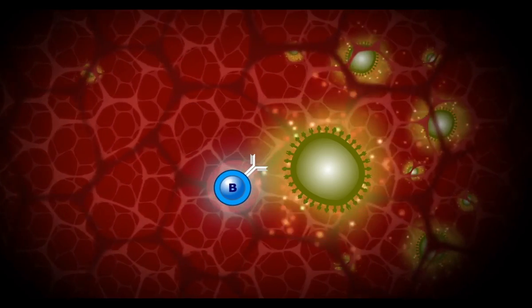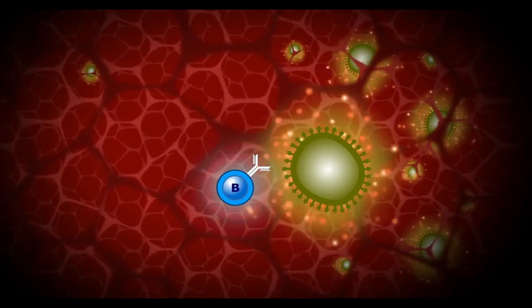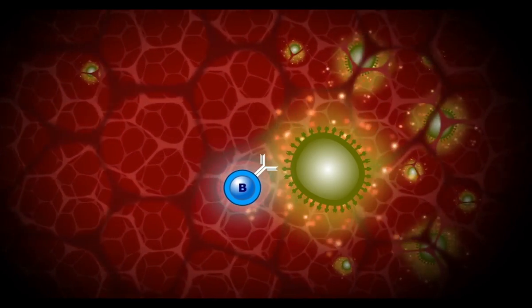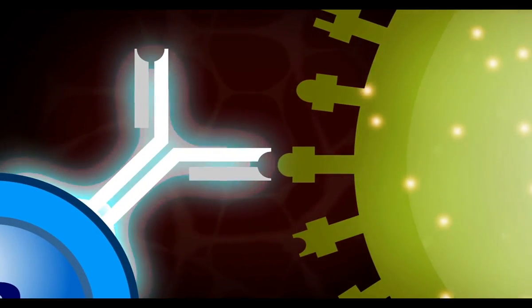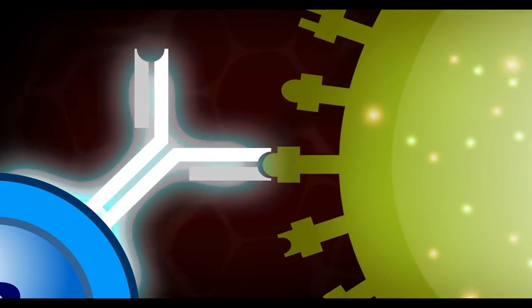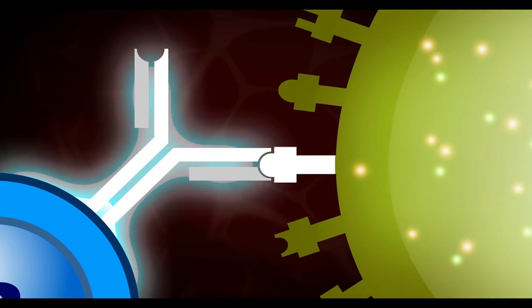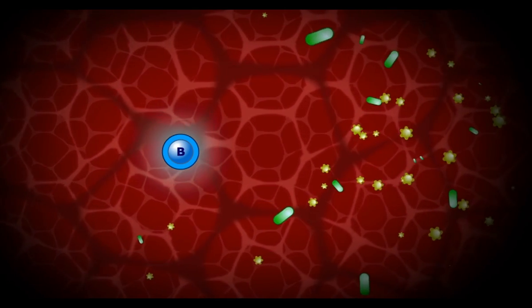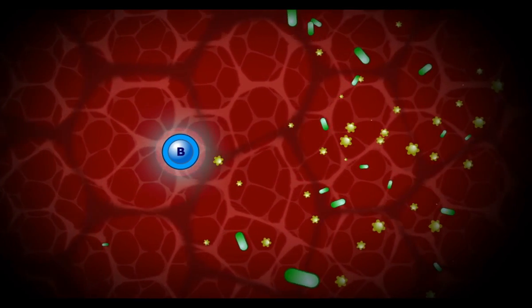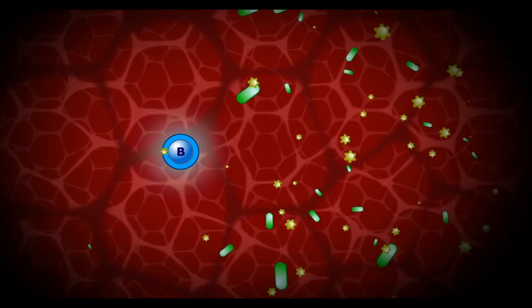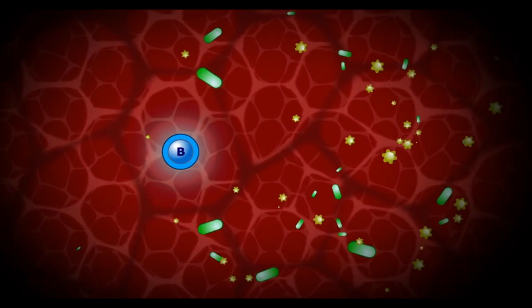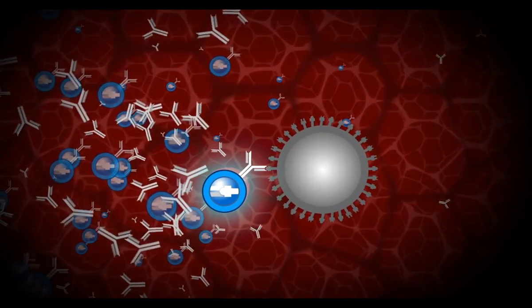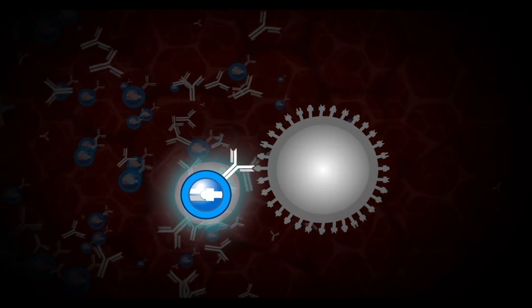The function of the immune system is to distinguish foreign substances from substances that are part of our own bodies. The part or parts of any foreign substance that are recognized by the immune system are known as antigens. Antigens are present on bacteria, on viruses, and on foreign cells from transfusions or organ transplants. Antigens may also be chemicals such as toxins or components of vaccines.